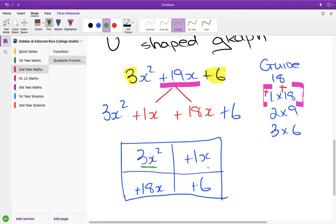Now, we look for what's common between this and this, and the only thing common is the x. So now, 3x squared is made up of x multiplied by what? And the answer there is 3x, so if you multiply 3x by x, you get 3x squared.